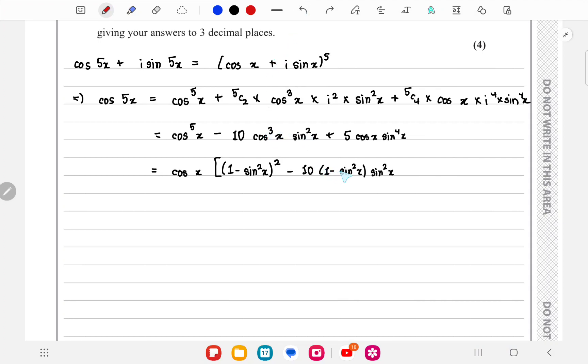And then if you take away one cos x from here, you'll get cos² x, so minus 10 (1 - sin² x) times sin² x. And if you take cos x from here, it will be left with 5 sin to the power 4x.